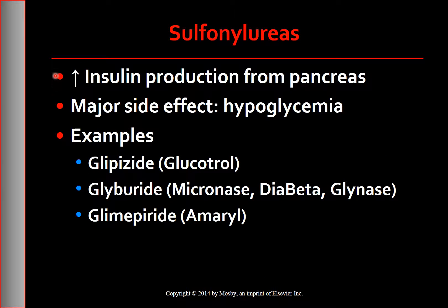The next class is sulfonylureas. Sulfonylureas include glipizide — examples are Glucotrol and Glucotrol XL — and glyburide, examples are Micronase and DiaBeta Glynase. The primary action of sulfonylureas is to increase insulin production from the pancreas. Therefore, hypoglycemia is a major side effect of the sulfonylureas.